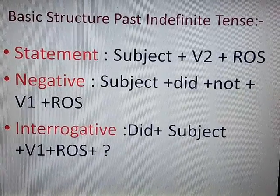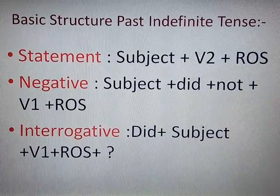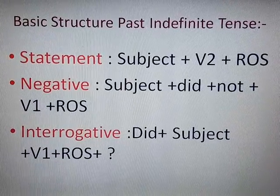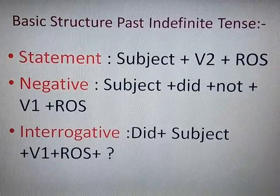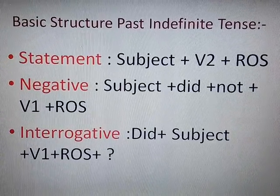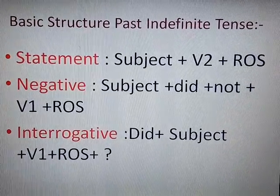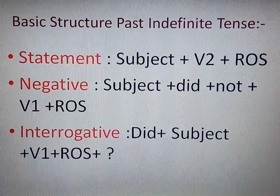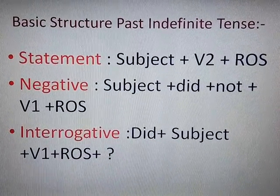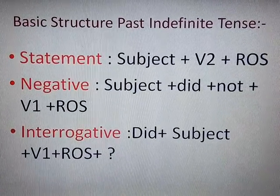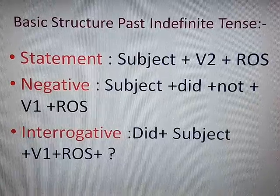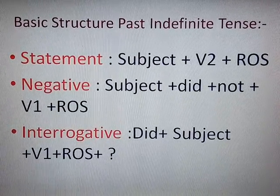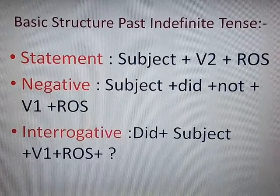The basic structure of past indefinite tense is: For assertive or affirmative sentences — Subject + Second Form of Verb + Rest of the Sentence.